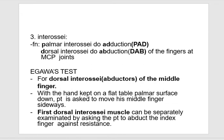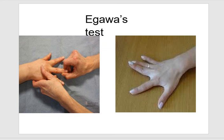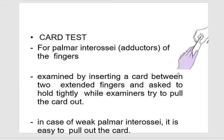Egawa's test for dorsal interossei abductors: with the hand flat on the table palmar surface down, the patient is asked to move the middle finger sideways. The first dorsal interosseous can be examined separately by asking the patient to abduct the index finger against resistance. Card test for palmar interossei (adductors): insert a card between two extended fingers and ask the patient to hold tightly — the examiner tries to pull the card out. In weak palmar interossei, it is easy to pull out the card.